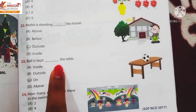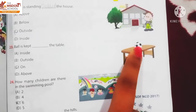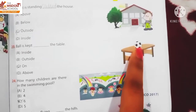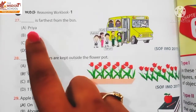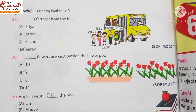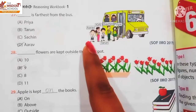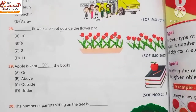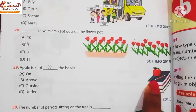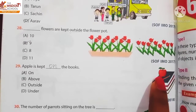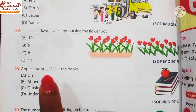Ball is kept dash the table. Ball kahan hai — table ke oopar hai. Table pe hai na? Ab ball aur table ka surface touch kar raha hai, toh hum yahan 'on' use karenge. Next: dash is farthest from the bus. Farthest ka matlab sab se duur. Bus ke farthest kaun hai? Arv. Apple is kept dash the books — apple books ke oopar padha hai. Jo apple aur book ka surface hai woh touch kar raha hai, so hum yahan 'on' use karenge.